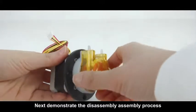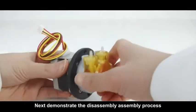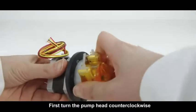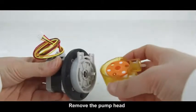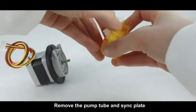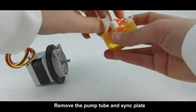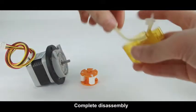Next, I'll demonstrate the disassembly process. First, turn the pump head counter-clockwise. Remove the pump head. Remove the pump tube and eccentric plates. Complete disassembly.